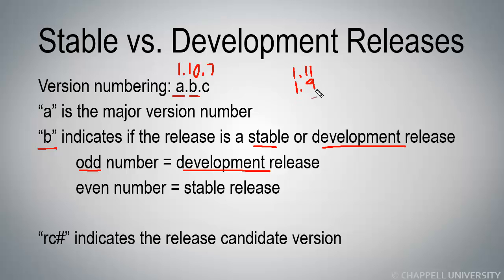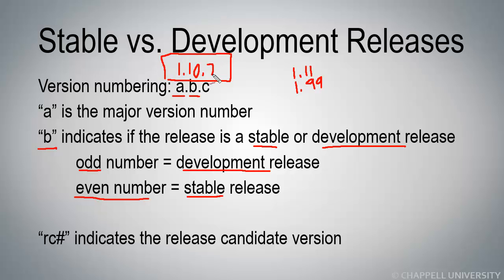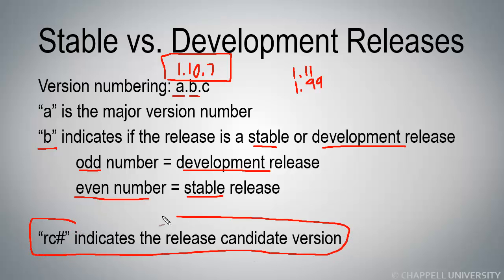1.11 just moved to 1.99, and that's also a development release. Whenever that second number is an even number, then it's a stable release. So 1.10.7 and 1.10.8 would be stable releases. There are also release candidate versions that are out as well.